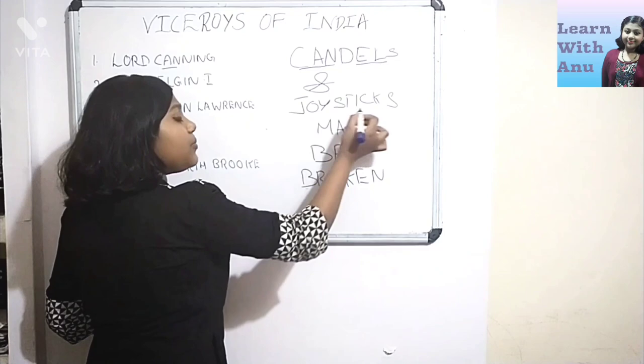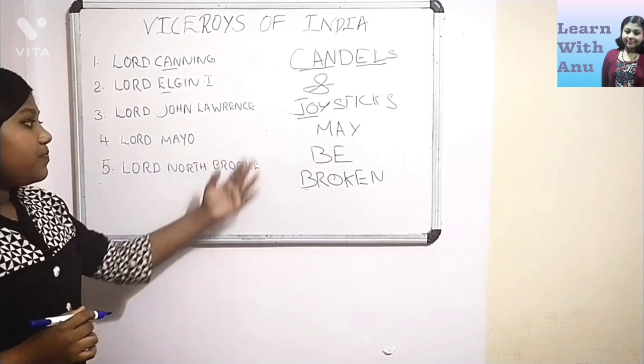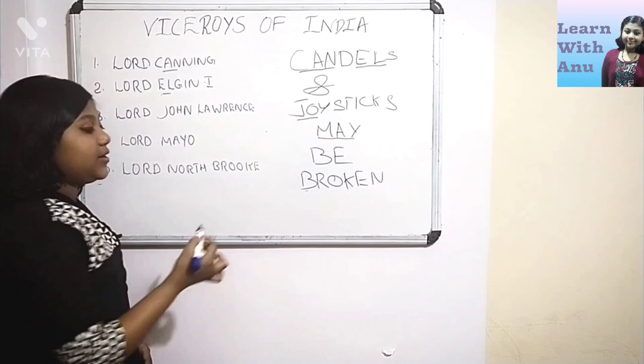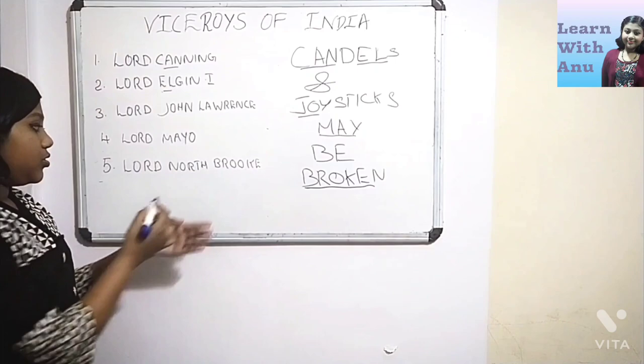From 'joysticks', this 'Jo' represents Lord John Lawrence, this 'May' represents Lord Mayo, and at last this 'Do' represents Lord Northbrook.